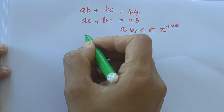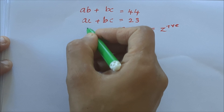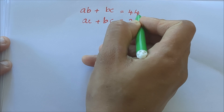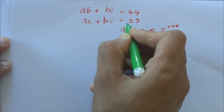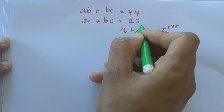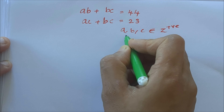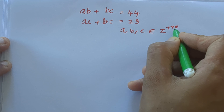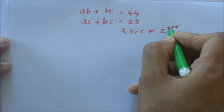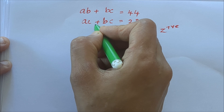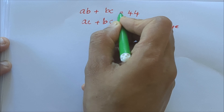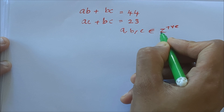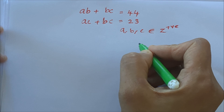Hello everyone. Our question is: ab plus bc equals 44, and ac plus bc equals 23. It is given that a, b, and c are positive integers. We have to find a, b, c from these two equations. Let's start.